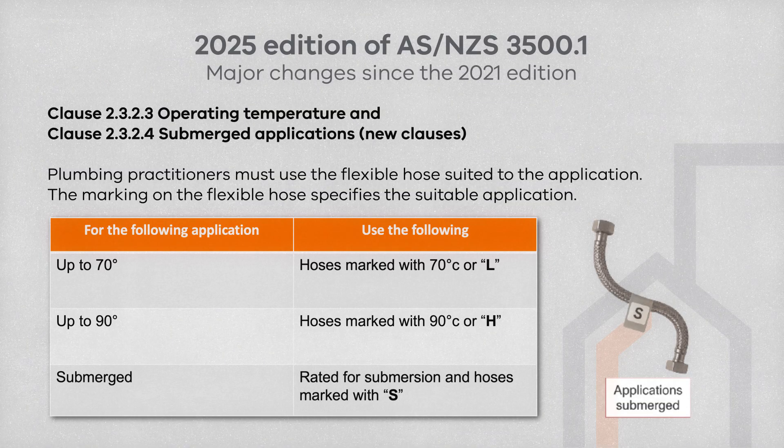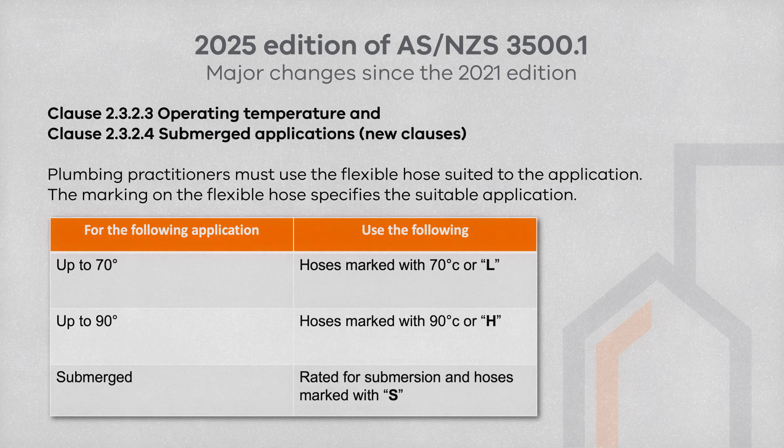A situation where you would use a flexible hose marked with an S would be in the top entry cistern for a water closet, as it's going to be sitting in water. It is important to ensure the correct hoses are used, as they are relevant in systems where pressure ratings are critical for safety and performance. Always refer to manufacturer's specifications for further information on the limitations of the hose application.